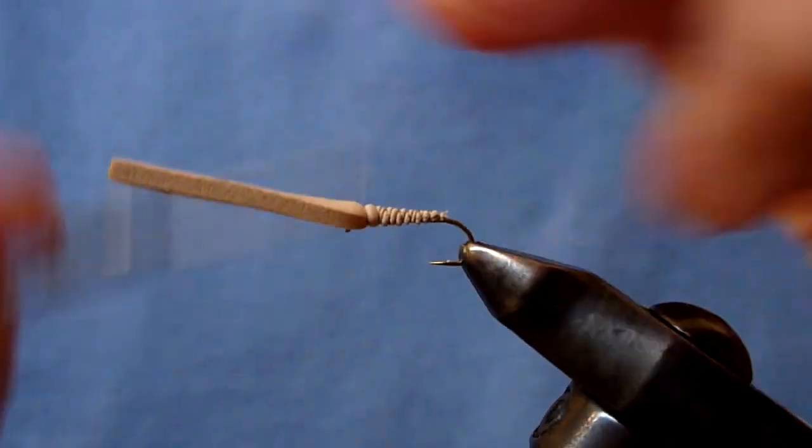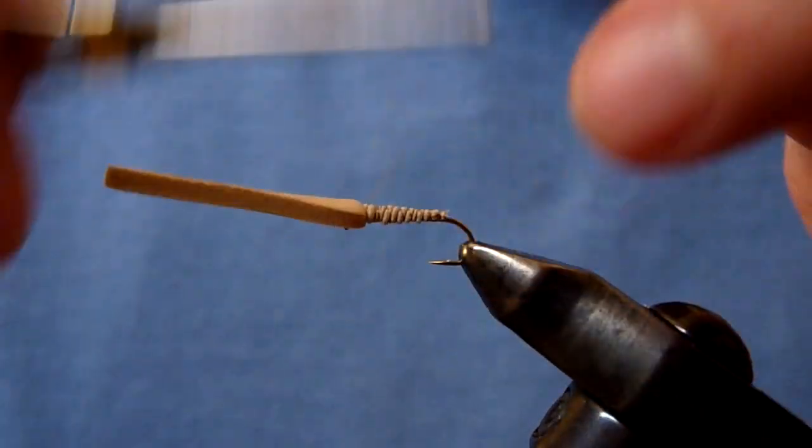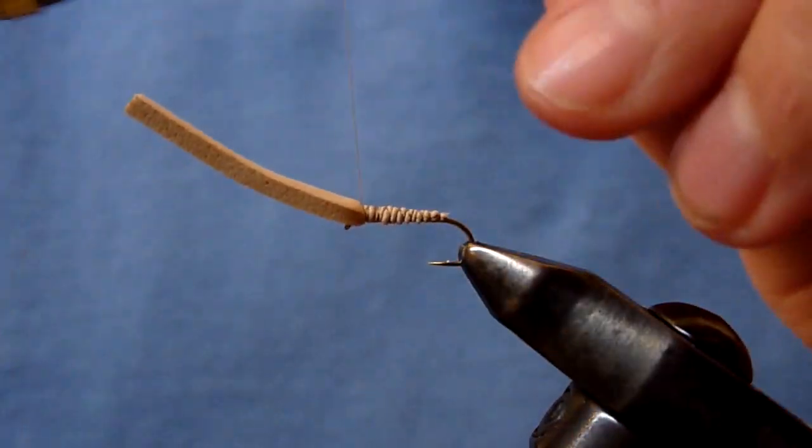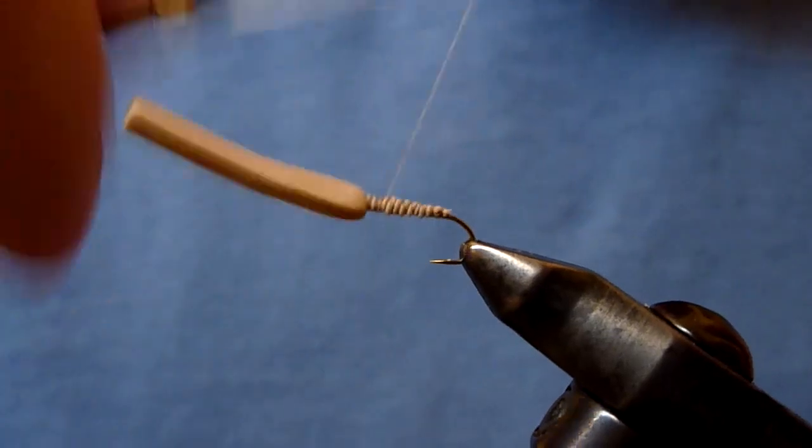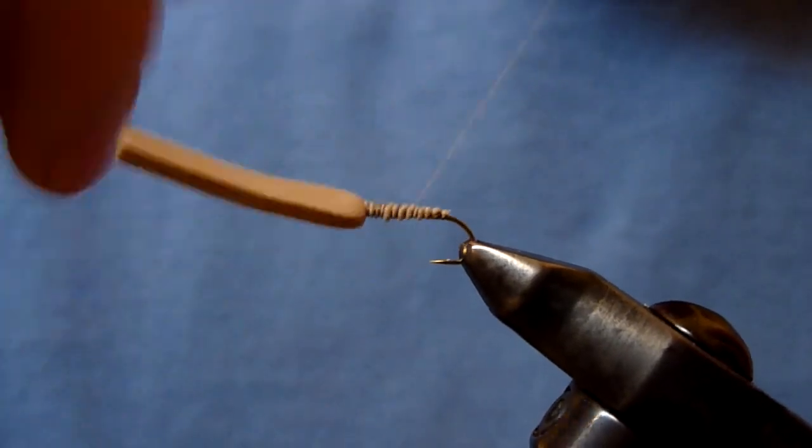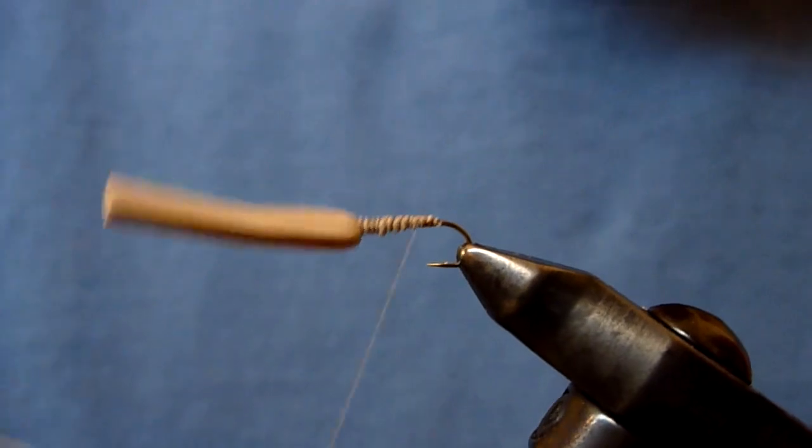Then we're going to take our thread and work it back and forth, and that's just to help create a nice smooth base for the dubbing, which we're going to put on in a second. Do that a couple of times.